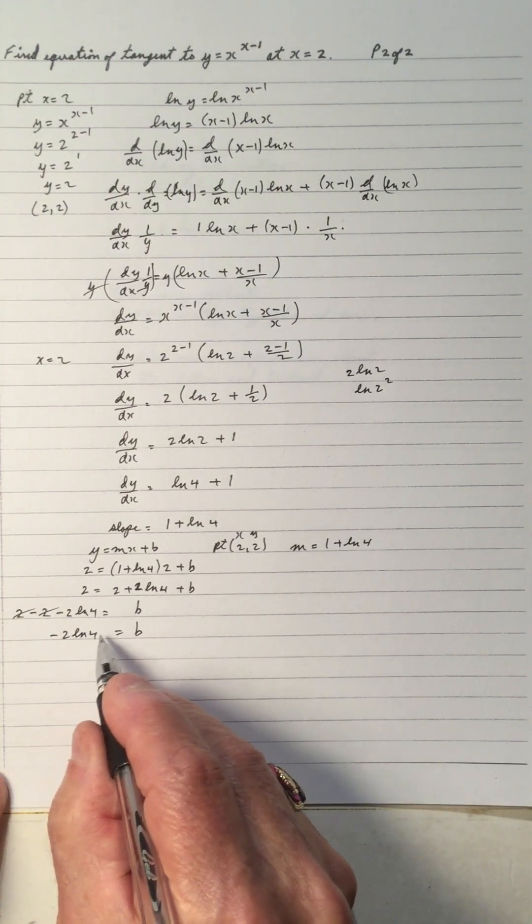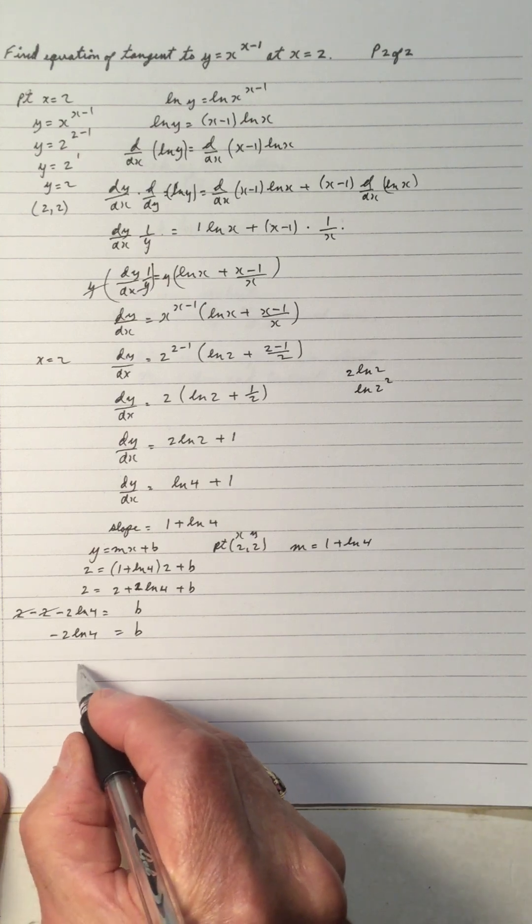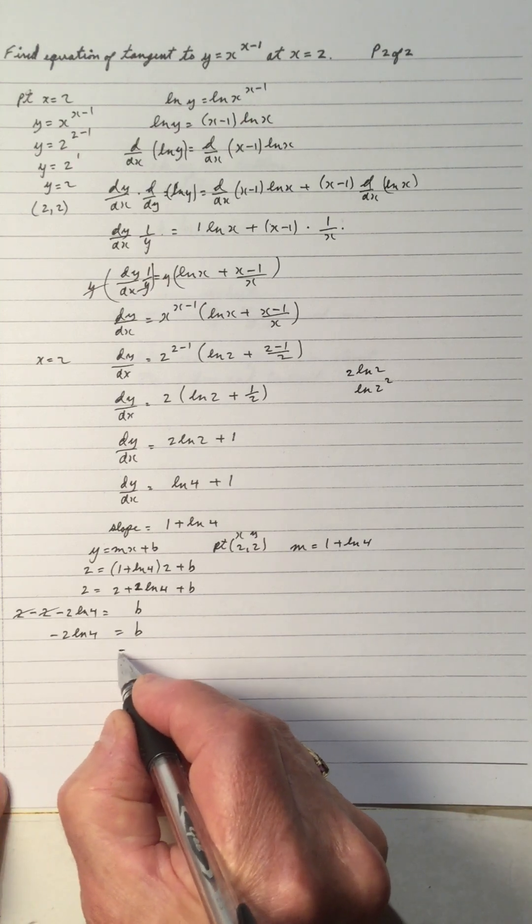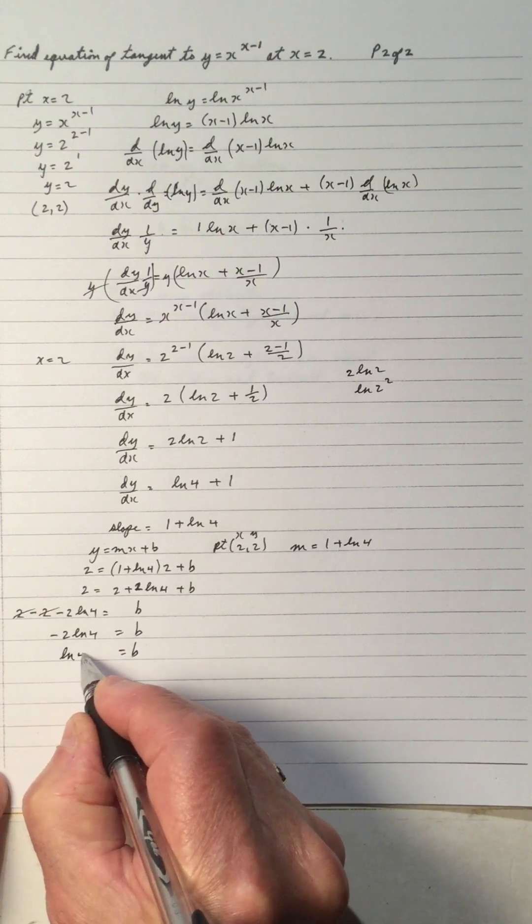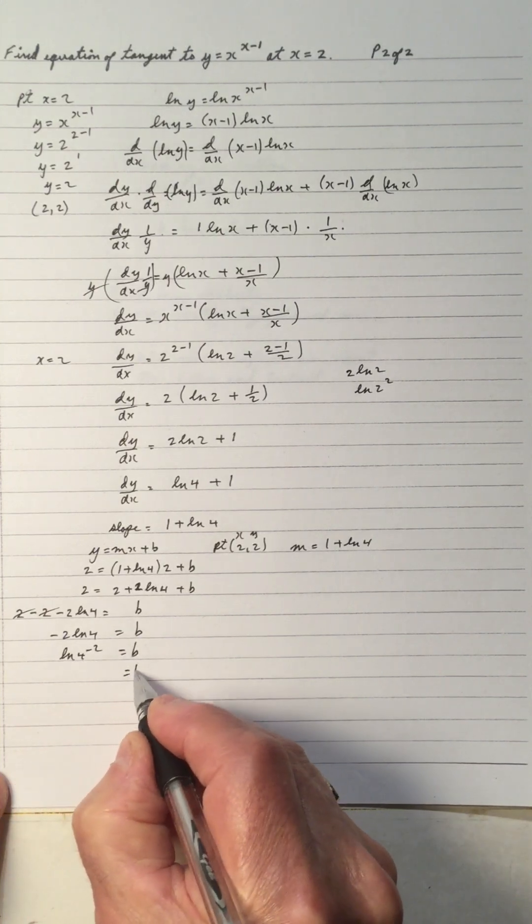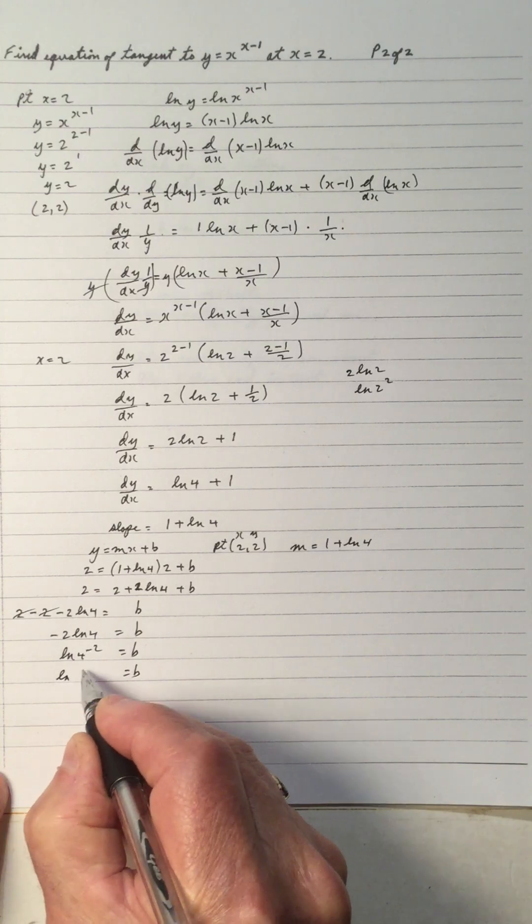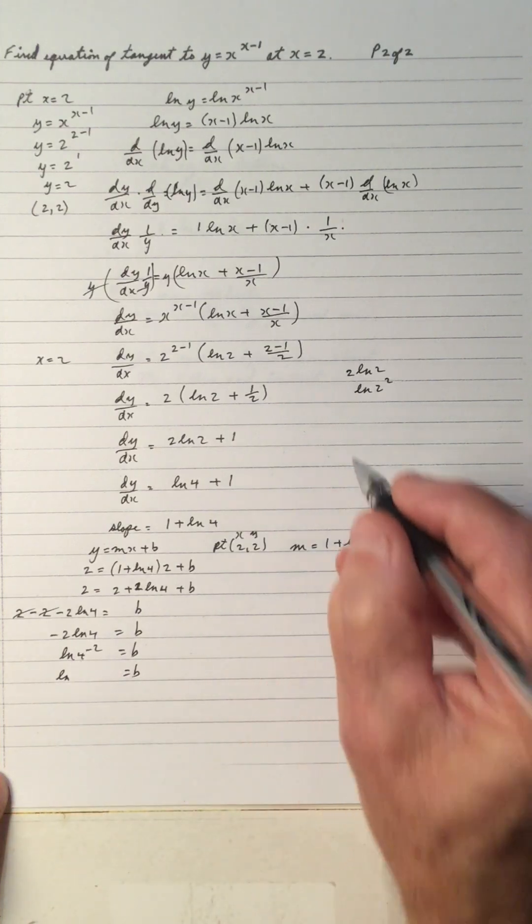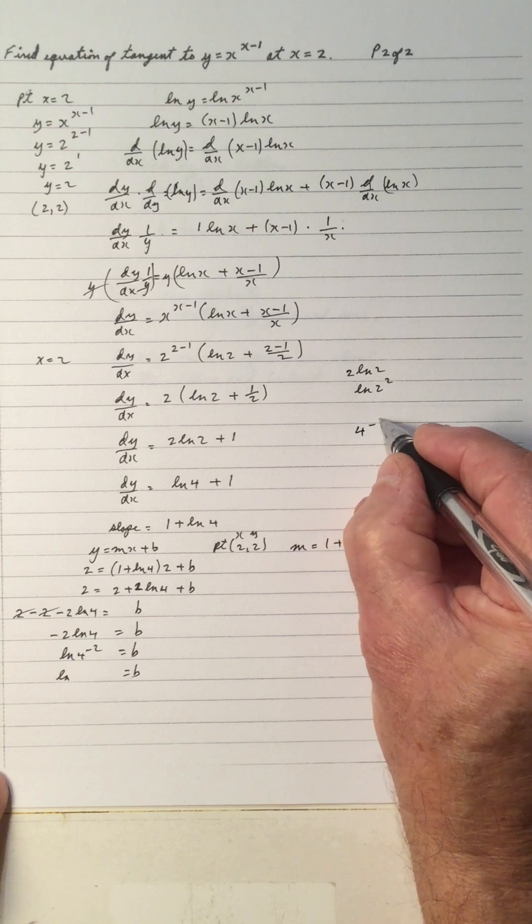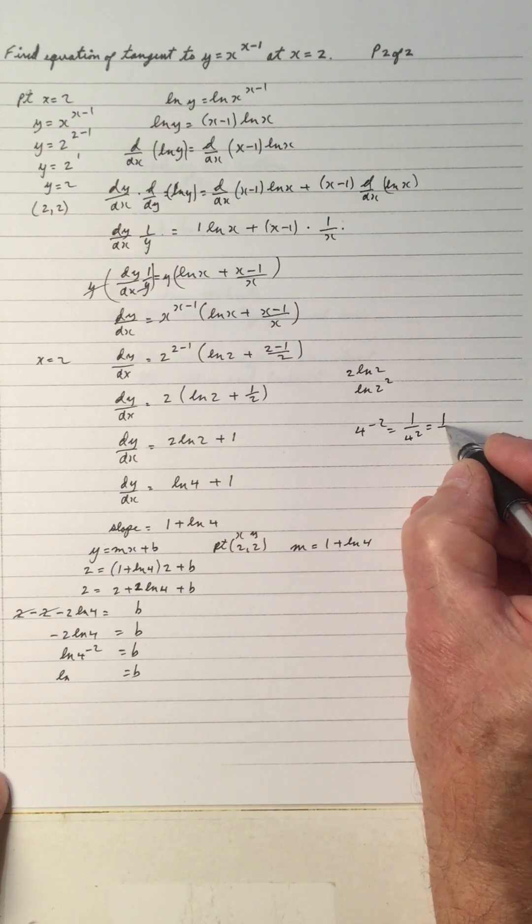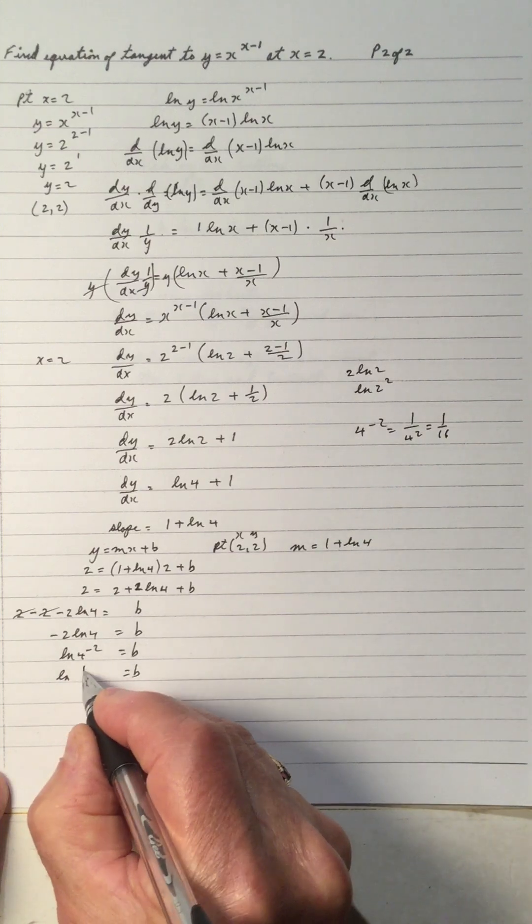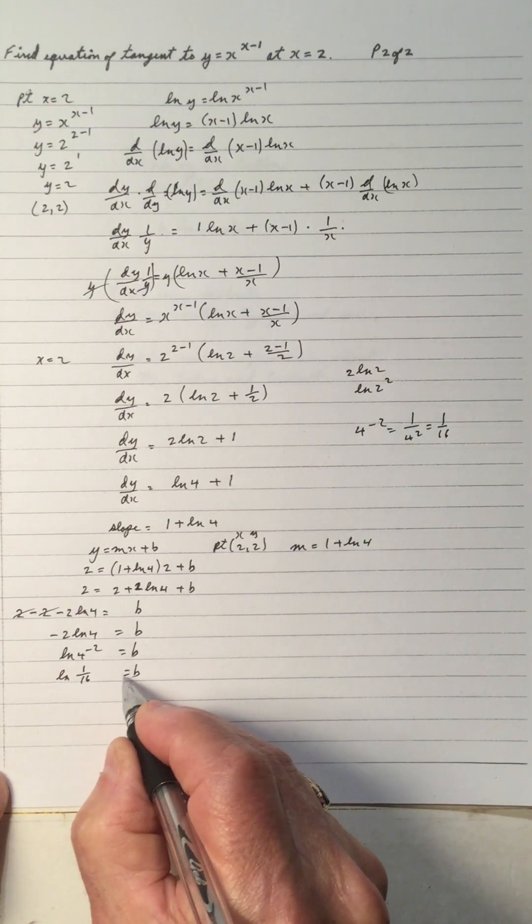And simplify that without rewriting it all. So negative 2 could be an exponent of the 4. So that could be, just right here, 4 to the negative 2 is 1 over 4 squared, which is 1 over 16. So that's ln of 1 over 16 as b.